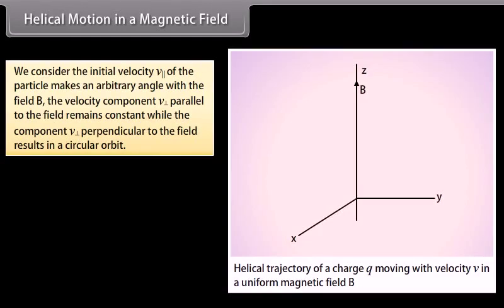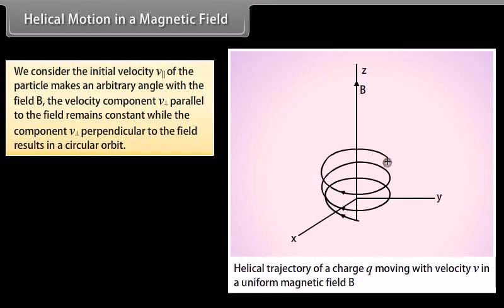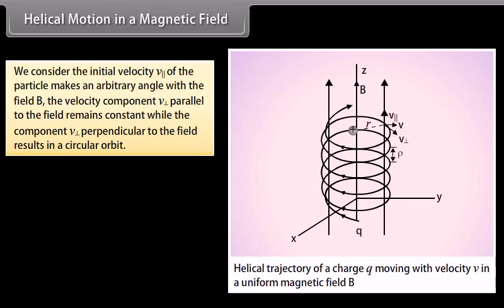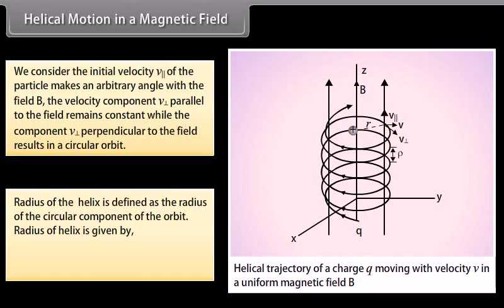Helical Motion in a Magnetic Field. We consider the initial velocity V of the particle that makes an arbitrary angle with the field B. The velocity component parallel to the field remains constant while the component perpendicular to the field results in a circular orbit. The radius of the helix is defined as the radius of the circular component of the orbit, given by the perpendicular component of velocity divided by frequency, which equals M times the perpendicular velocity component divided by QB.